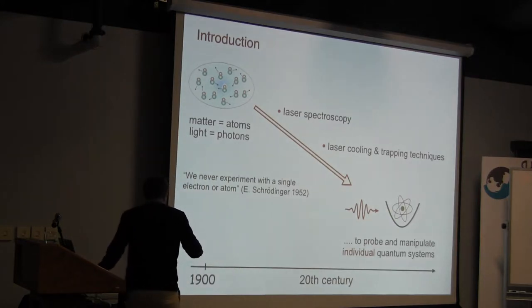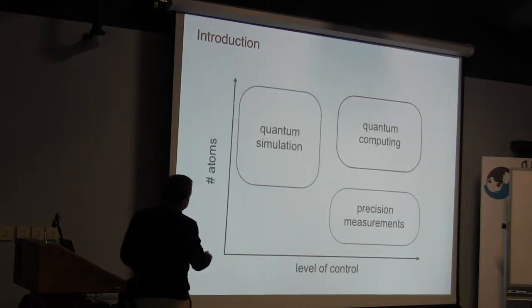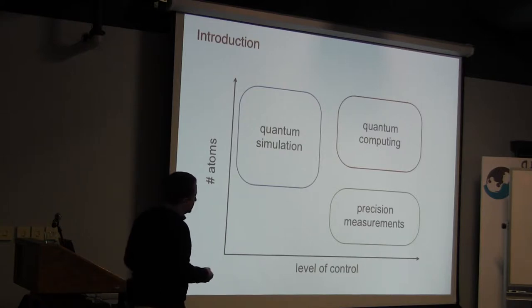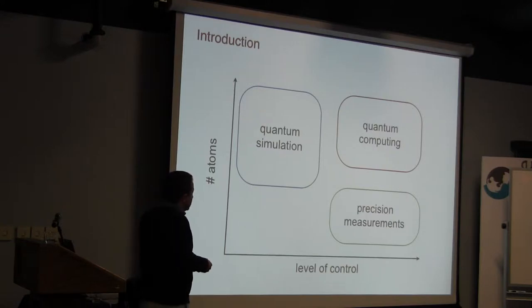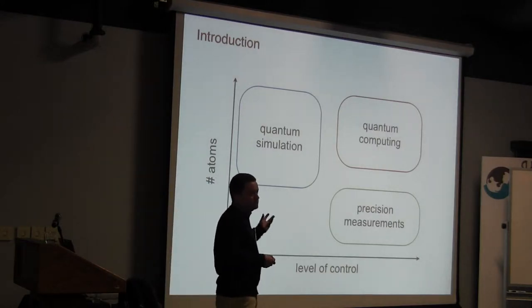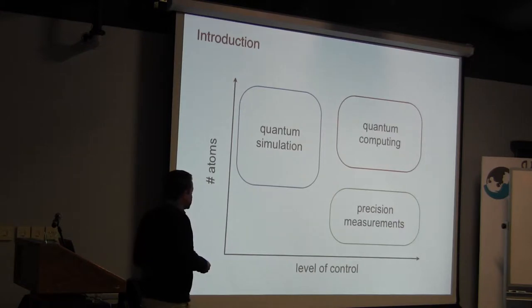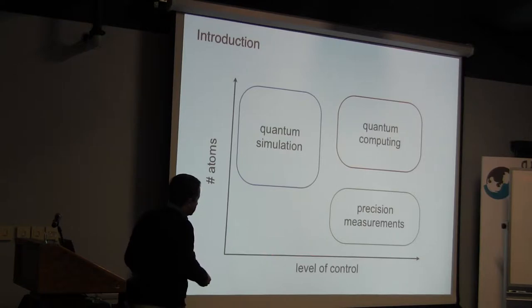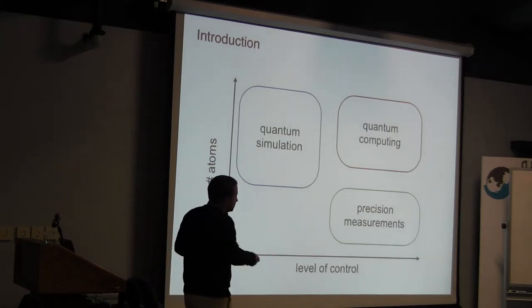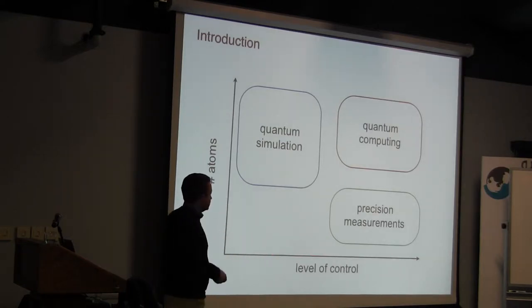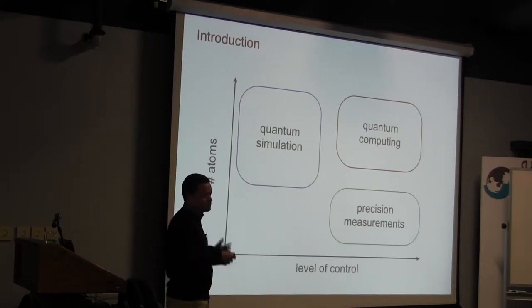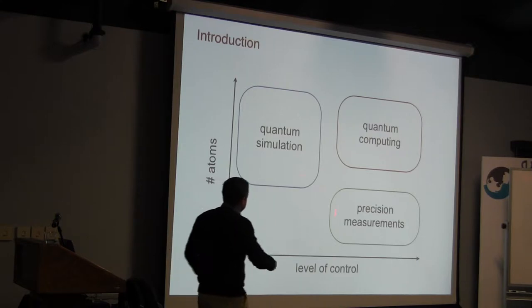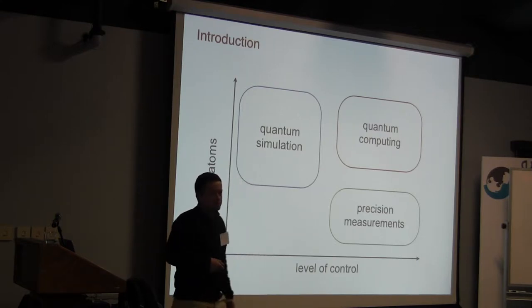This is a big scientific achievement, but also by now we know that pursuing this direction and getting better, you might eventually end up with completely new applications. Using control of quantum systems — depending on whether you have control of many atoms or a large level of control — you can do many new things: use this for precision measurements, build quantum simulators, and maybe eventually build even a quantum computer.